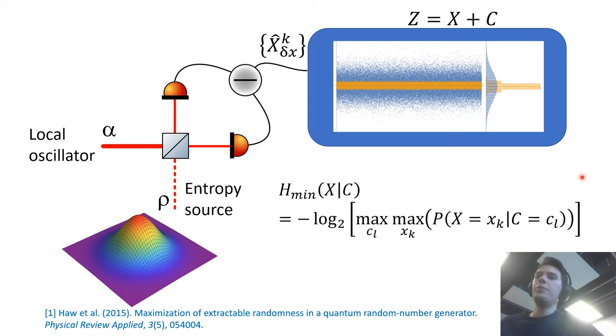And therefore the min entropy would need to be conditioned on the knowledge of this classical noise and it would change to this quantity here where you assume that the adversary knows this classical noise and you take the worst case scenario of his guessing probability. This has been done in this work where they actually tune their measurement parameters in order to maximize the extractable randomness.